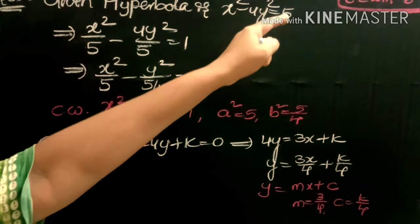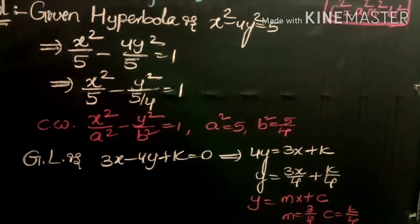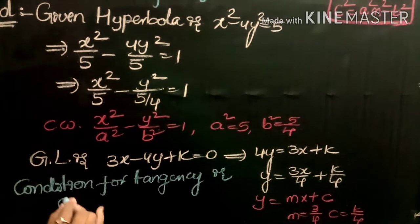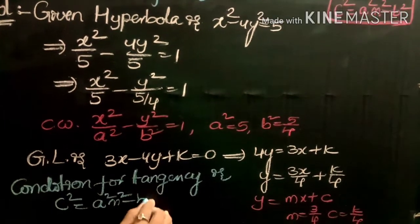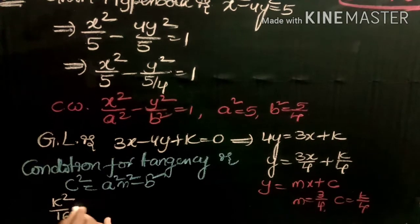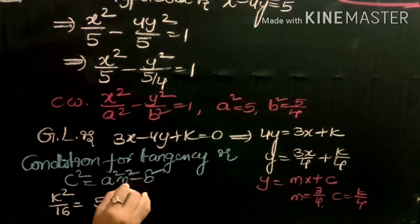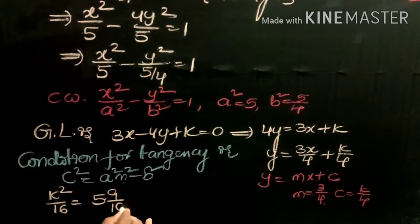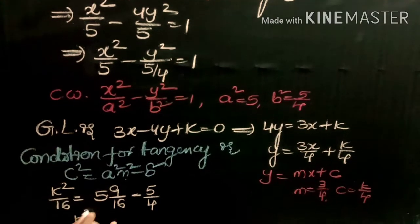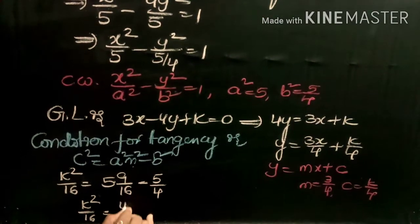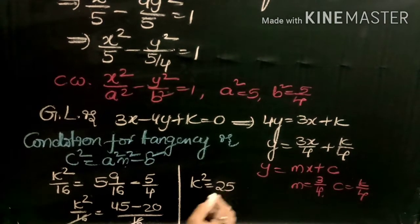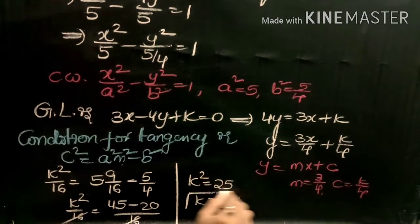The condition for tangency is c squared equals a squared m squared minus b squared. Substituting: k squared by 16 equals 5 into (9/16) minus 5/4. Simplifying with denominator 16: k squared by 16 equals (45 minus 20) by 16, giving k squared equals 25. Therefore k equals plus or minus 5.